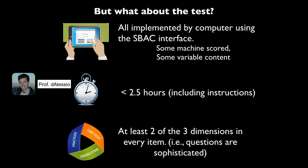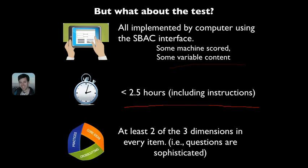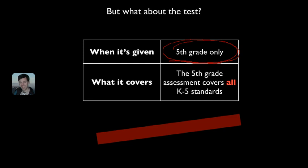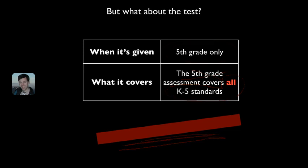What about the test? The California science test will be implemented on a computer, similar to the Smarter Balanced assessments. It will have machine-scored items and variable content where kids type answers in, and it takes less than two and a half hours. Each item covers at least two of the three NGSS dimensions, so the questions are going to be pretty sophisticated. At the elementary level, the statewide assessment is only given in fifth grade — however, this is not a fifth-grade exam. It covers all K–5 standards, which means K–4 teachers, we need you. We are all accountable for this score.